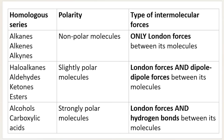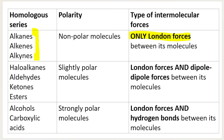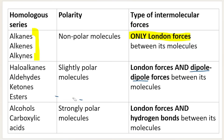I've taken each homologous series and classified them by intermolecular force type. The hydrocarbons — containing only carbon-carbon and carbon-hydrogen bonds, whether single, double, or triple — only have London forces between their molecules. Haloalkanes, aldehydes, ketones, and esters all have dipole-dipole forces and London forces. So immediately you can see that the intermolecular forces in this second group are stronger than those in the hydrocarbon group.